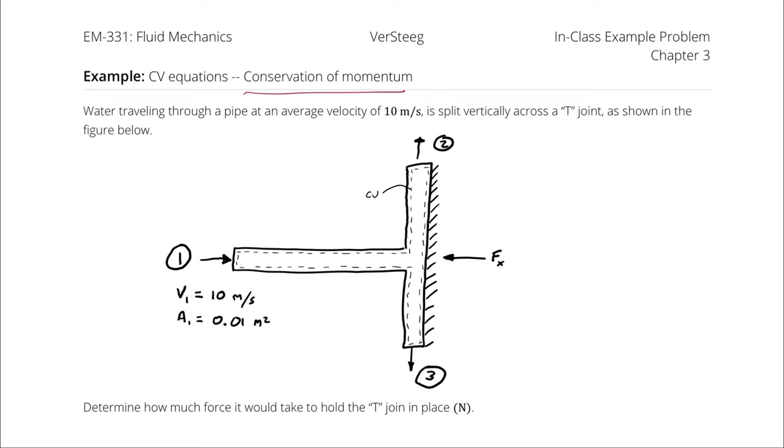So we know that we're going to be using a conservation of momentum equation somewhere here. The next question is, how many directions do I care about? Do I need an x-axis, a y-axis, and a z-axis conservation of momentum equation, or can I get away with just two, or maybe even one?